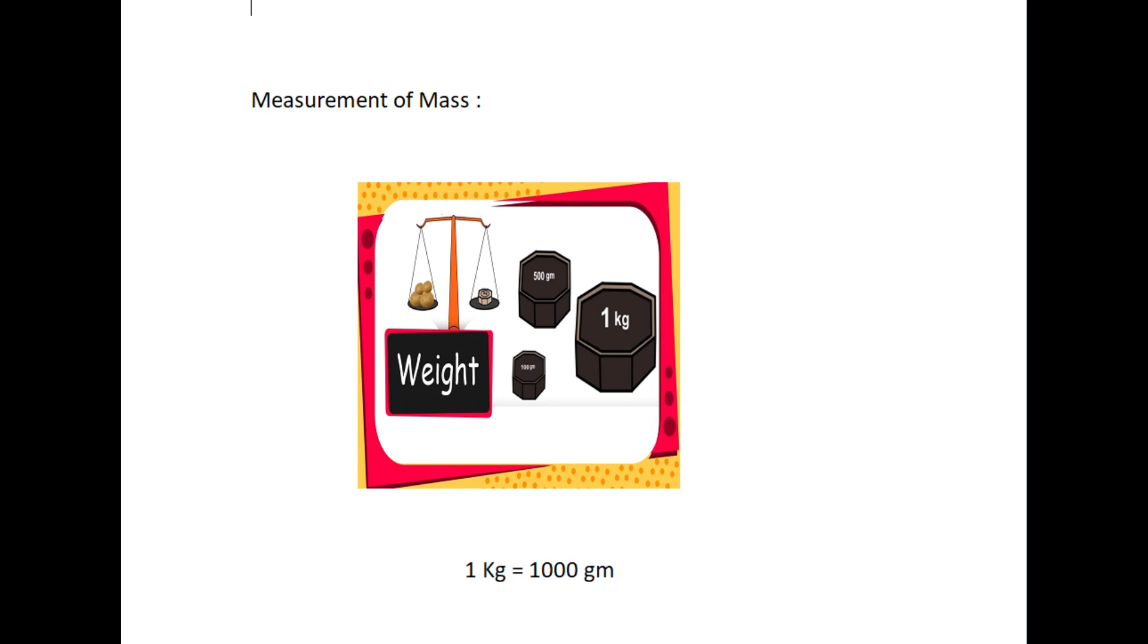Measurement of mass. Mass is used to measure the weight of an object. The most common units of mass are the gram and the kilogram. We use kilogram to weigh heavier objects and the gram to weigh lighter ones. 1 kilogram equals 1000 grams.